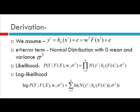In the derivation, we assume that y_i equals h_w(x_i) plus e_i. As already explained, h_w(x_i) is our hypothesis. So y_i is your hypothesis plus some error term, and we assume that this error function has a normal distribution with zero mean and variance sigma-squared, where your hypothesis is w-transpose x_i.